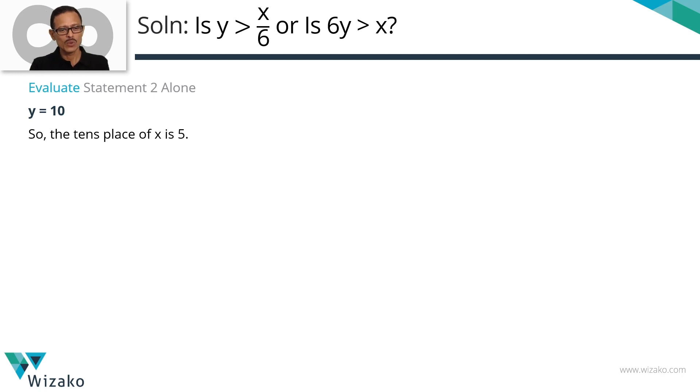It says Y equals 10. What is Y? Y is equal to 2 times the tens place of X. So if Y is 10, then we have the tens place of X being 5. That's what you've got. 2 times tens place of X equals 10. So tens place of X is equal to 5.